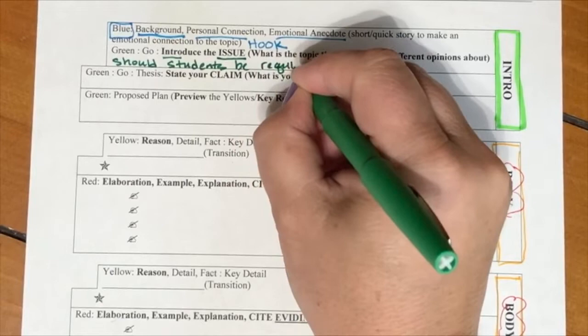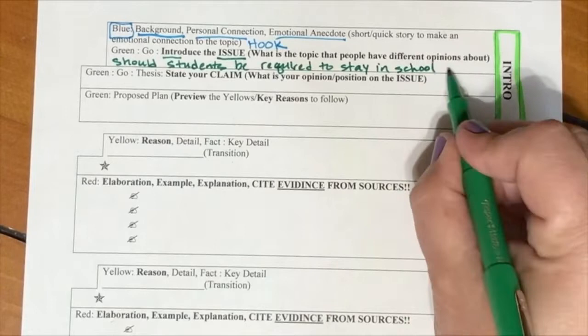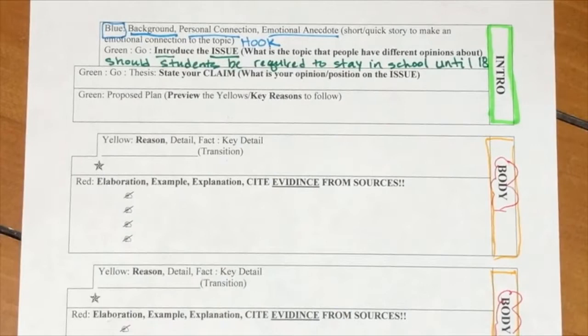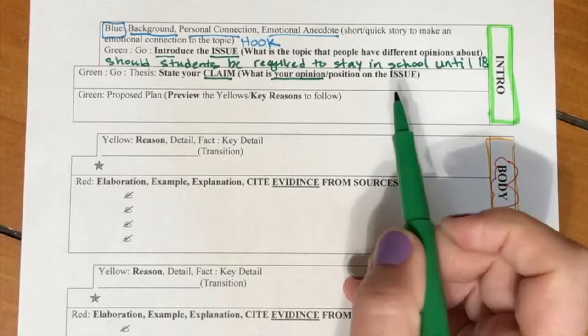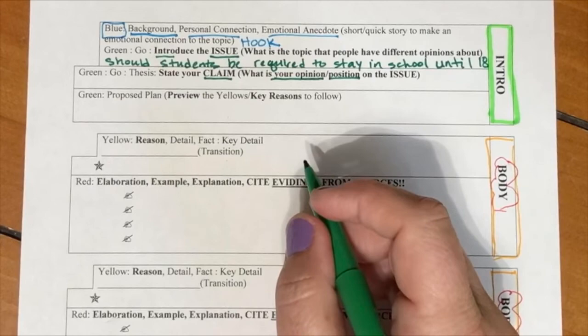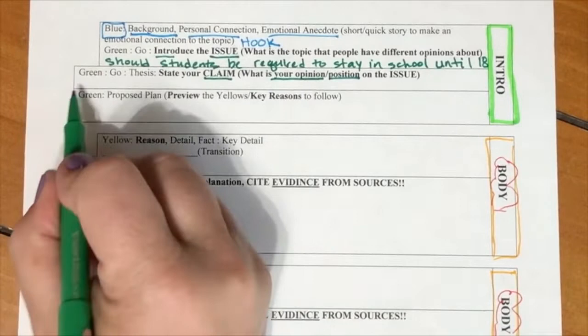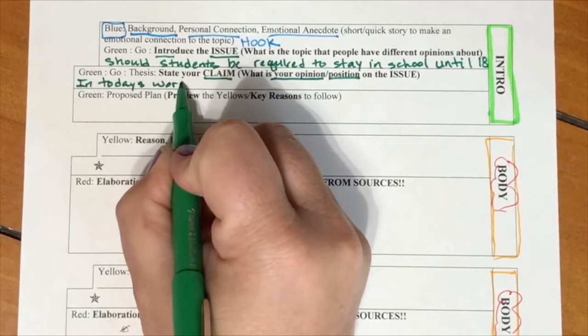Then you need to make sure you state your claim. Your claim does not have to be the same as this one that I am going to write here. I'm going to pick a sample claim. A claim that you might make is that in today's world with the needed education, students should have to stay in school until 18. That would be the claim. The claim is what is your opinion and you want to make sure you state that really clearly.